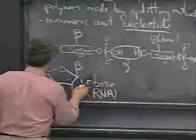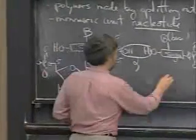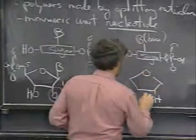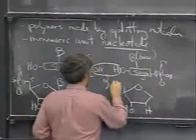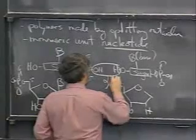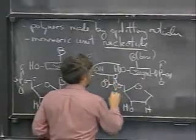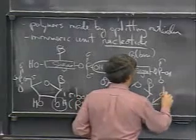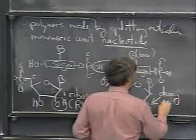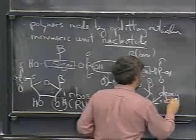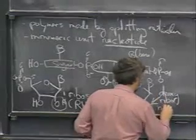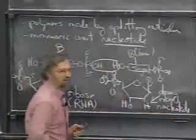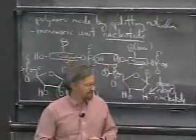If the hydroxyl on ribose is replaced by a hydrogen, the rest remaining the same, you get a deoxyribonucleotide. And if you polymerize those together, you get DNA, or deoxyribonucleic acid.